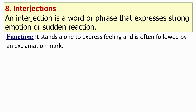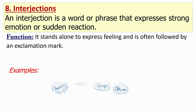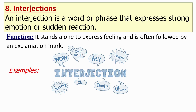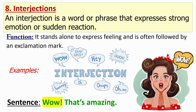Now let's check the final part of speech: interjection. An interjection is a word or phrase that expresses strong emotion or sudden reaction. It stands alone to express feeling and is often followed by an exclamation mark. For examples: wow, good grief, hey, ouch, hooray, oh, oops, oh no, etc. Now let's check a sentence: "Wow, that's amazing." In this sentence, wow is an interjection.